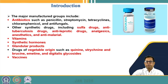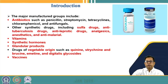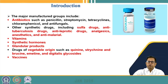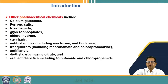Vitamins can be produced from natural extracts, and synthetic hormones can be produced for patients whose bodies cannot produce sufficient amounts. Glandular products made from animal tissues target specific organs. Drugs of vegetable origin include quinine, strychnine, brucine, emetine, and digitalis glycosides. Vaccines are also produced — for example, Covaxin and Covishield were produced in large amounts in India to safeguard people against COVID-19.